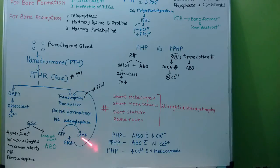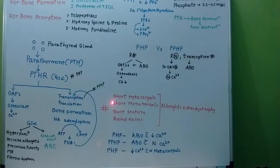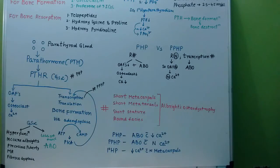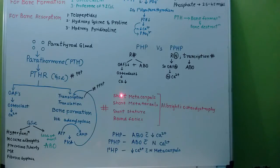Now, what happens if there is a transcription defect in any disease? If transcription is blocked or defective, there will be no bone formation. So, there will be short metacarpals, short metatarsals, short stature, and round faces. This whole picture is described as Albright's osteodystrophy.